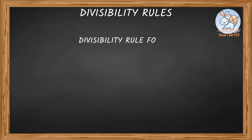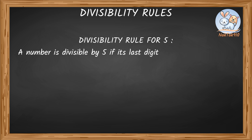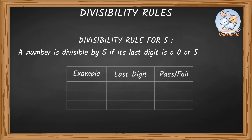Let's look at the divisibility test for 5. This is very simple. A number is divisible by 5 if its last digit is 0 or 5. For 605, the last digit is 5, so 605 is divisible by 5. For 921, the number ends with 1, so it does not pass the test. And 860 ends with 0, so it is divisible by 5.